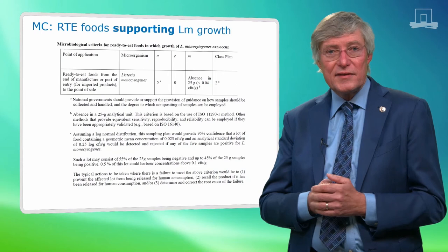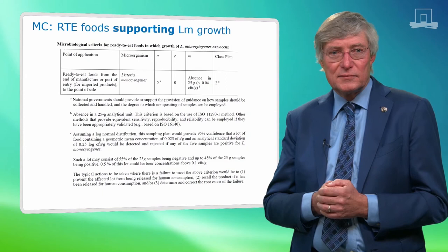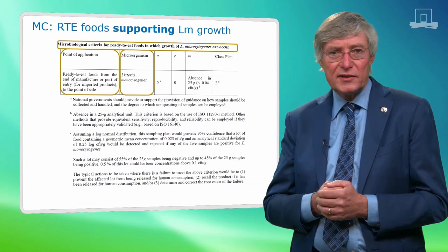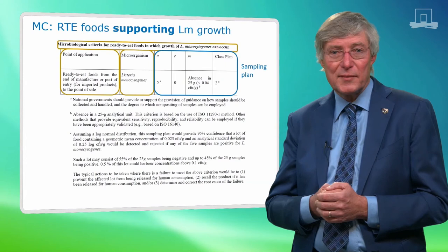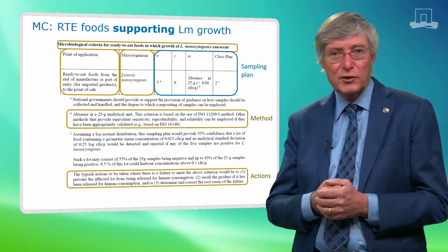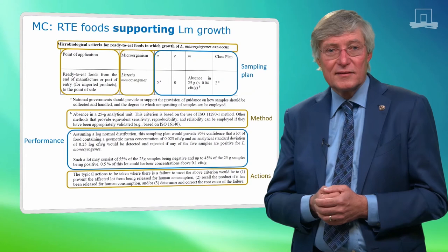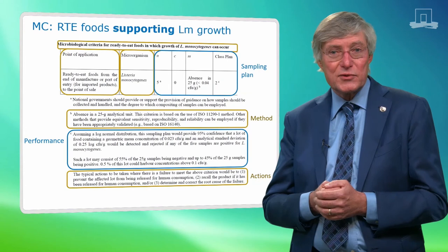Here you see the MC that has been proposed by Codex for RTE food in which LM can grow — foods that do support LM growth. Again, all necessary details are specified to make the MC clear to stakeholders: the pathogen, the food type and point of application, the sampling plan and limits for LM, details of the method for detection, and the typical actions to take when a food lot doesn't meet the MC. Also in this case, the performance of the sampling plan is specified given the same assumptions as we saw for the other MC.